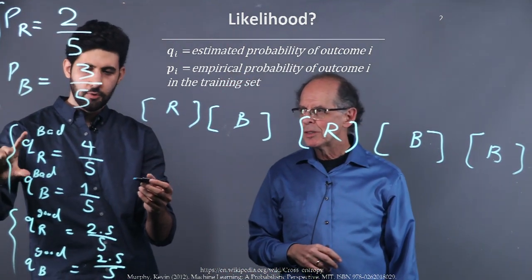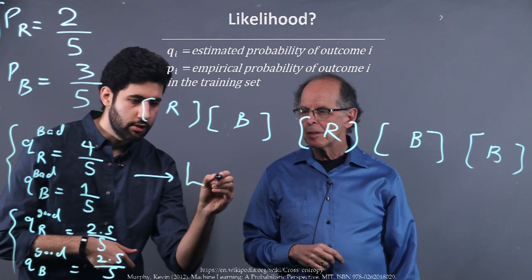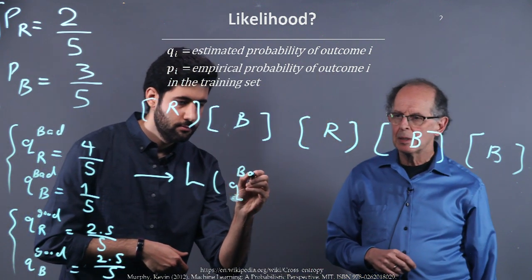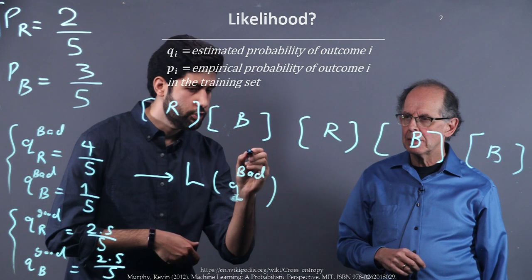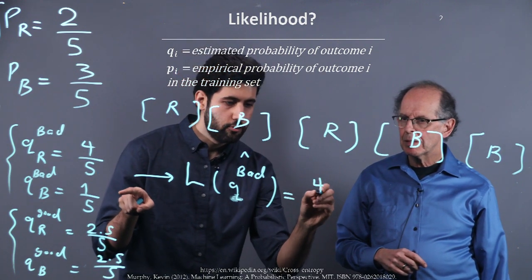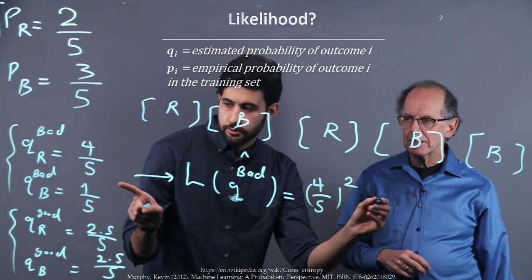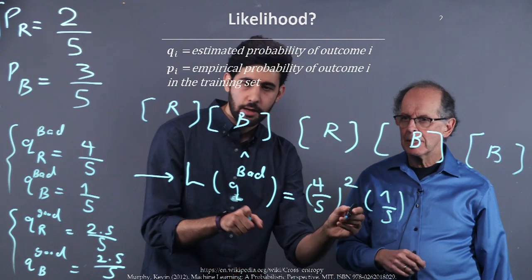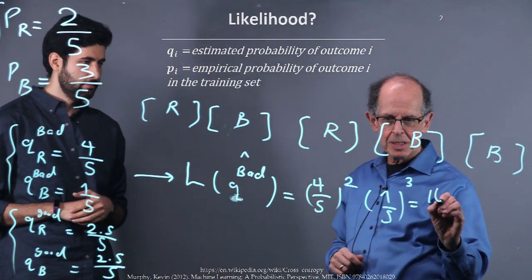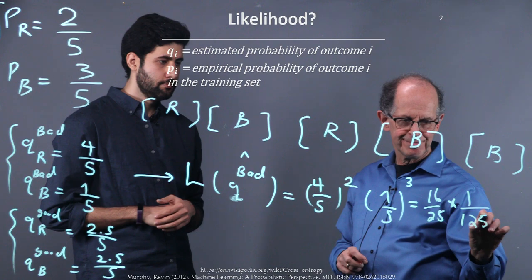Exactly. So if this model wants to describe this training set, let's see what's the likelihood. The likelihood of Q bad is four over five, and how many times this happens? It is two times, so squared. And one over five, how many times this happens is three, so cubed. This equals 16 over 25 times 1 over 125.